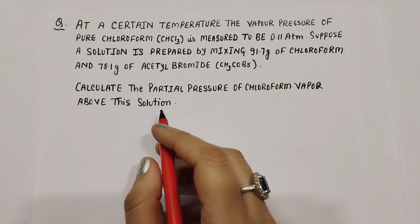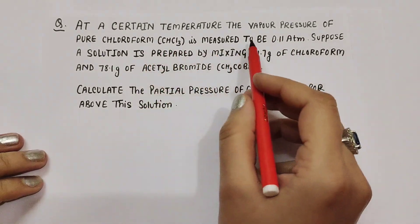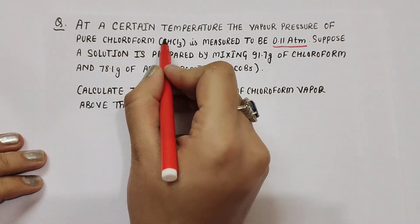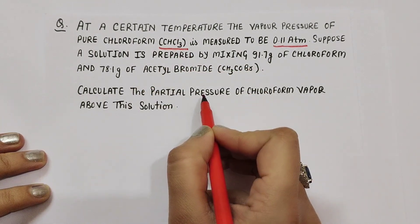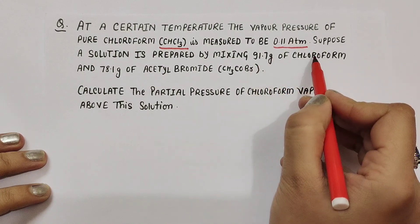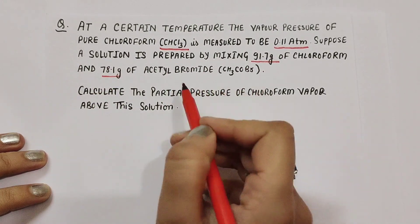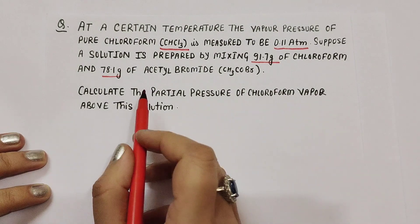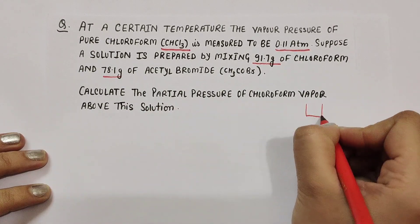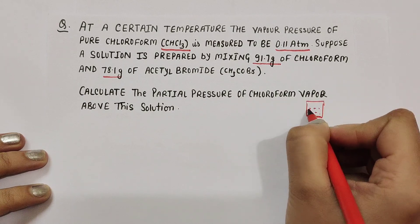Here's a question on Raoult's Law. At a certain temperature, the vapor pressure of pure chloroform is measured to be 0.118 atm. Chloroform is the solvent here. A solution is prepared by mixing 91.7 grams of chloroform and 78.1 grams of acetyl bromide. We have to calculate the partial pressure of chloroform vapor above this solution.